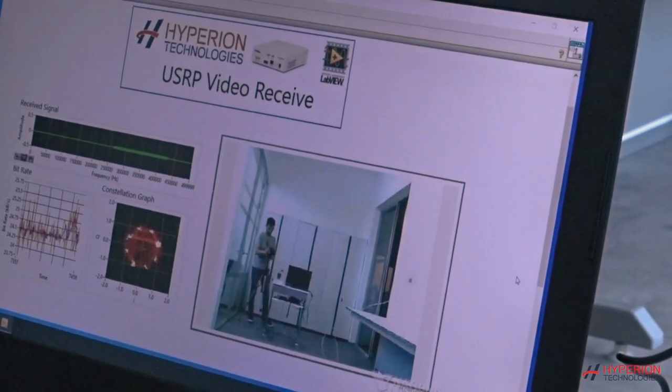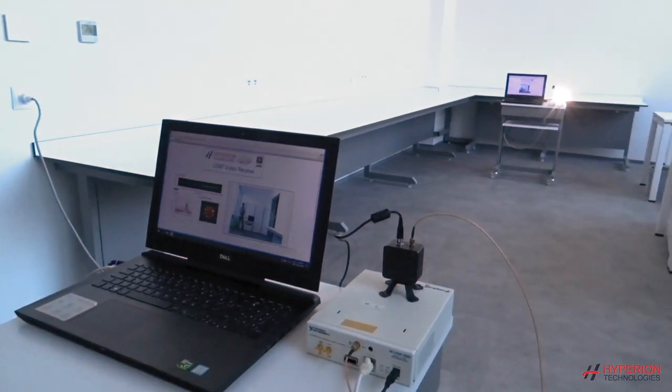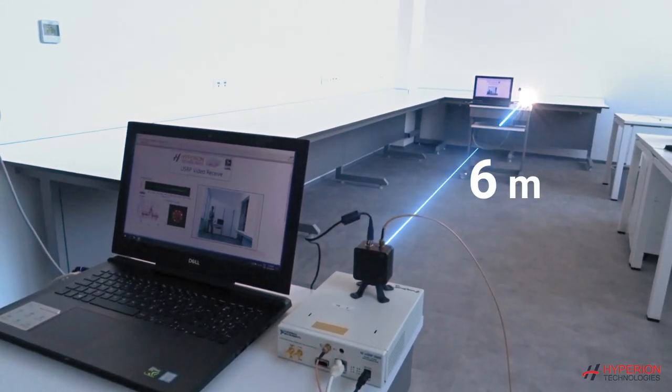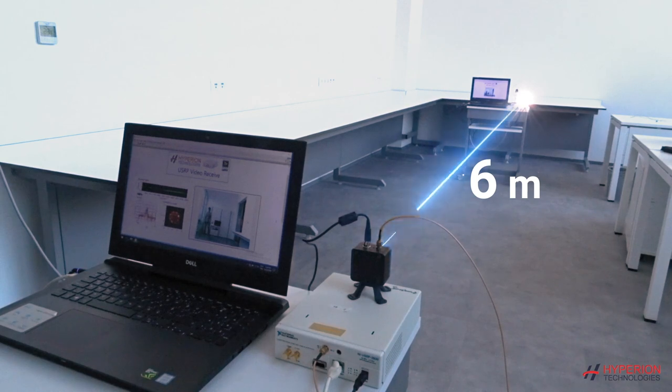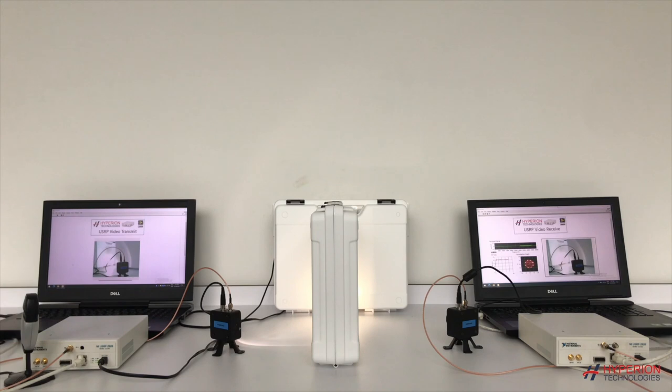We consider a line-of-sight transmission case where the transmitter and the receiver can see each other. The link distance is 6 meters, and a standard definition live broadcast is transmitted in real time.